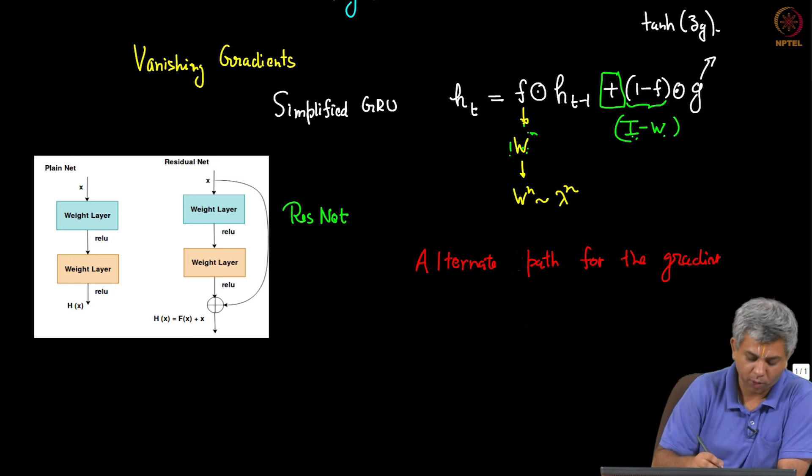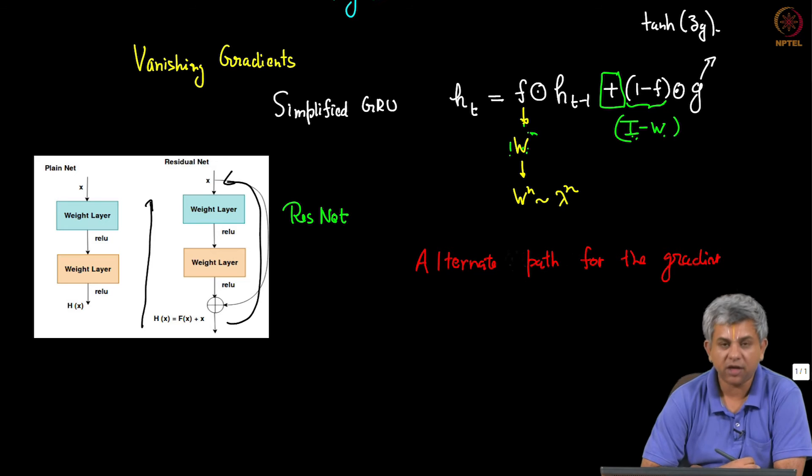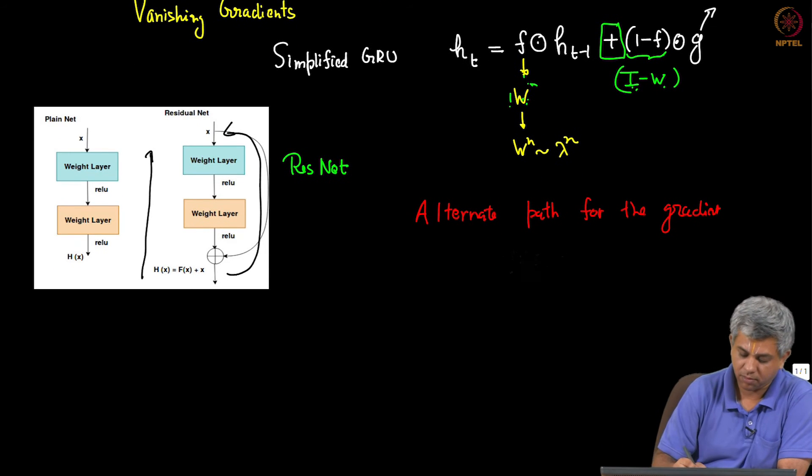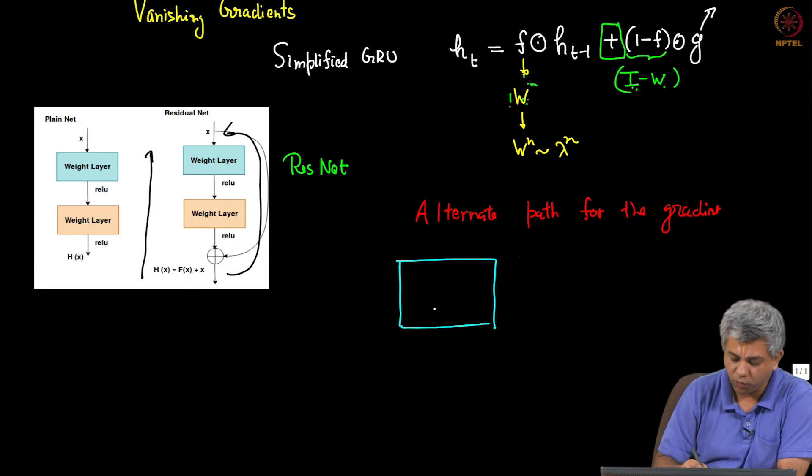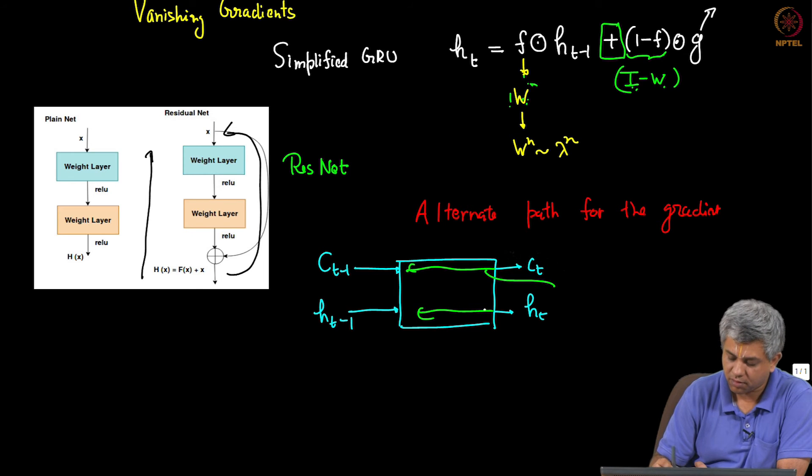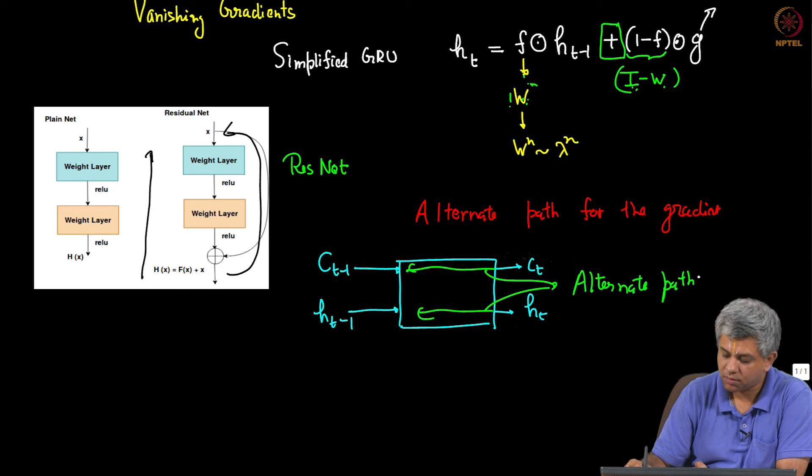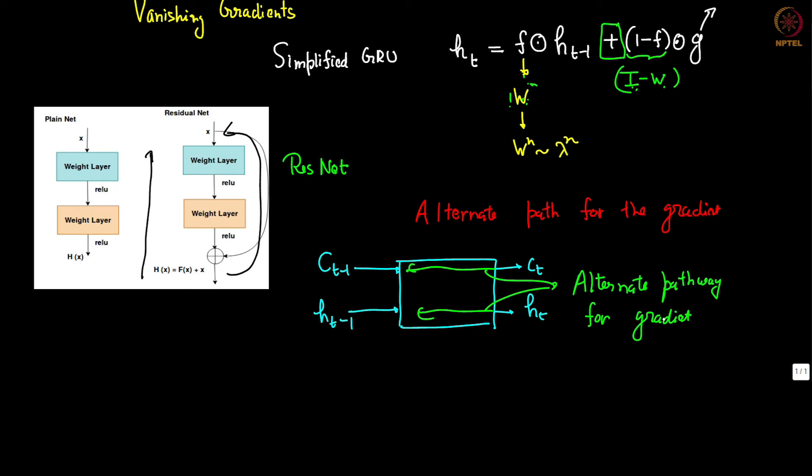When you are doing backprop it can either go directly through this or it can go through this. So similarly when we were doing LSTM, we had one pathway through h_{t-1}, we had another pathway, and this was the reason why we drew the figure through c_t. This alternate pathway for the gradient actually helps you.